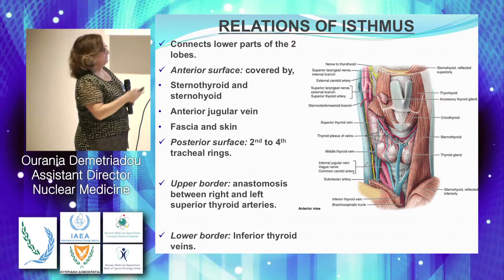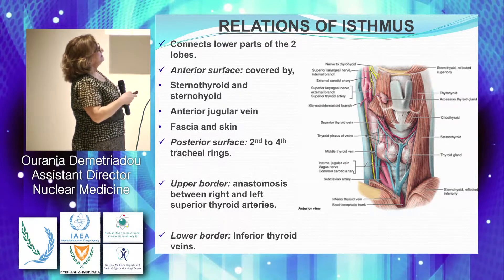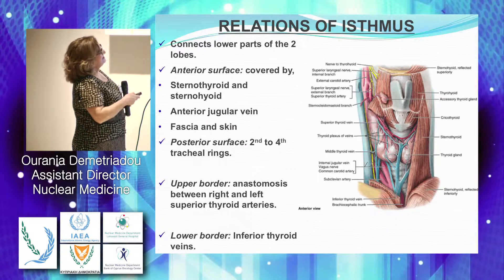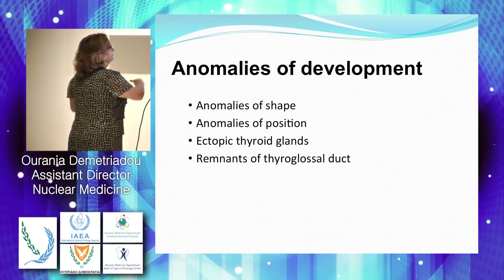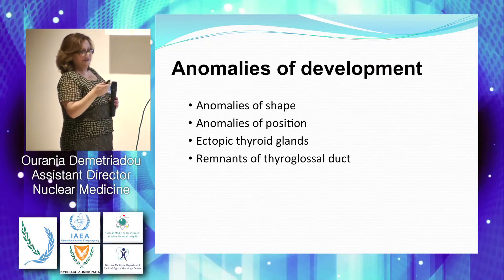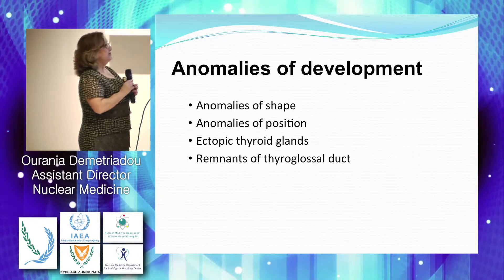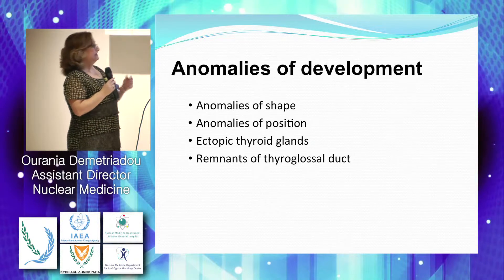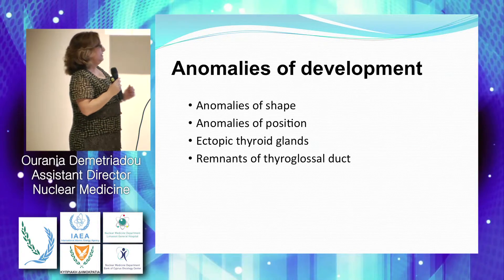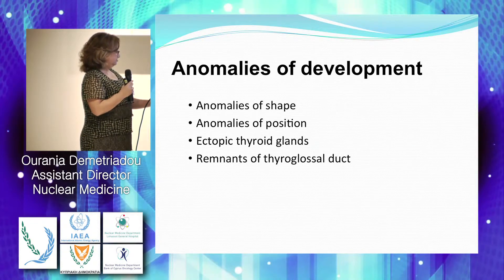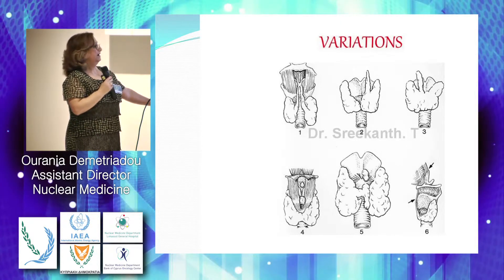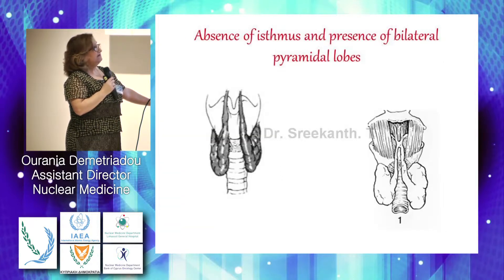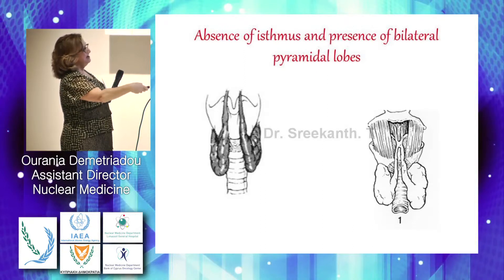Because we are out of time, just a few points: the anterior surface is covered by the muscles, fascia, and skin. The isthmus is there anteriorly. During development we can have different anomalies — anomalies of shape and position. We can have ectopic thyroid glands, sublingual thyroid from the thyroglossal duct. Here are some shapes of these different anomalies of the thyroid — we can even have no isthmus at all.